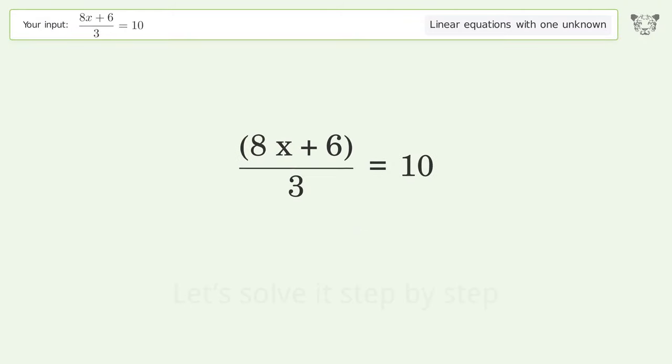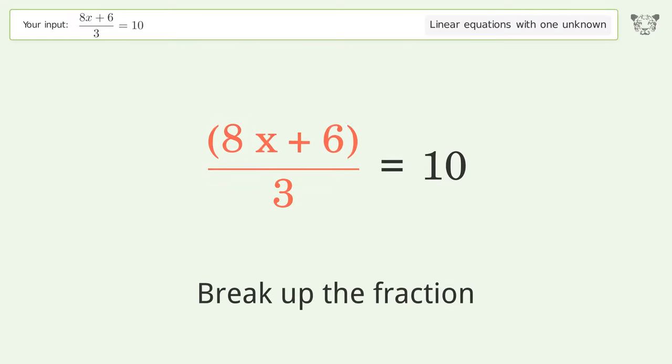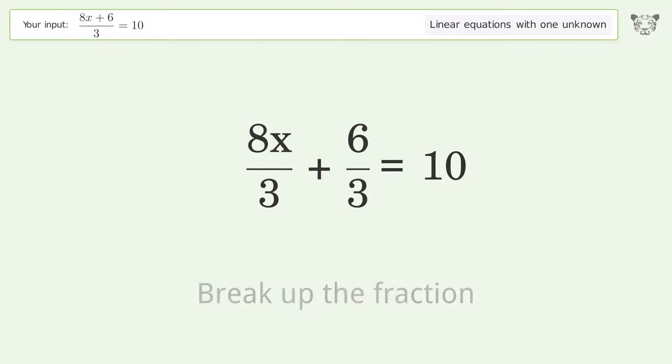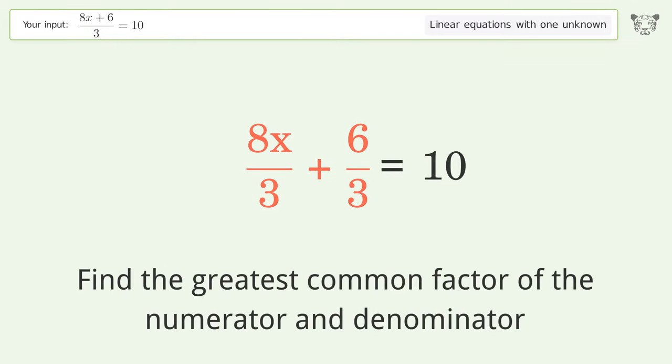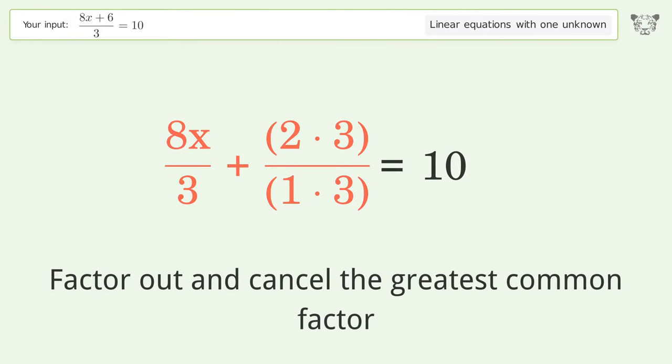Let's solve it step by step. Simplify the expression. Break up the fraction. Find the greatest common factor of the numerator and denominator. Factor out and cancel the greatest common factor.